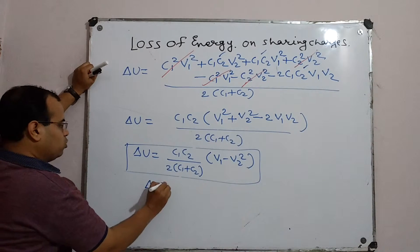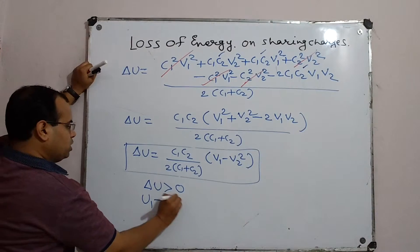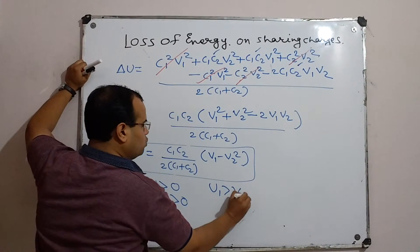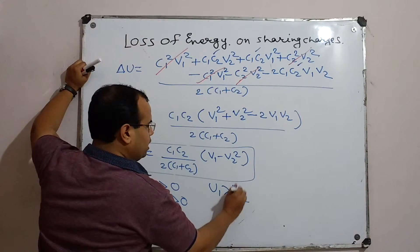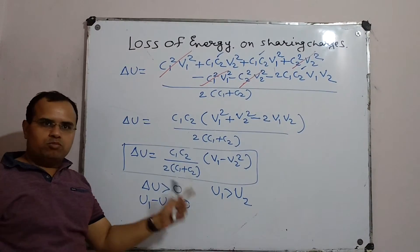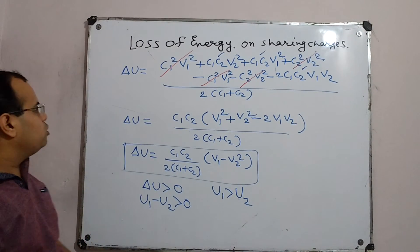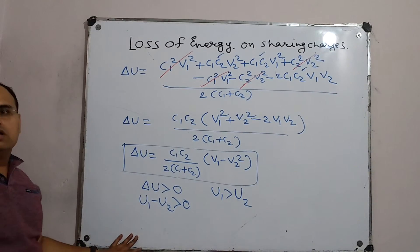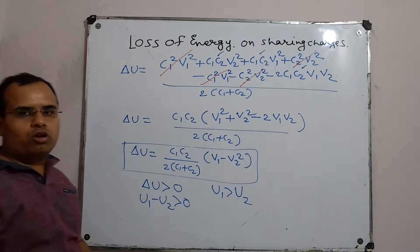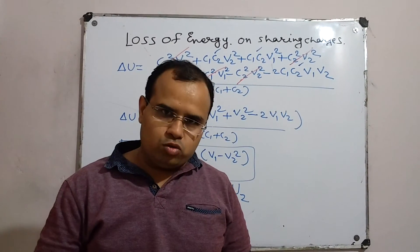You can see that this particular term del u is greater than 0. It means u1 minus u2 is greater than 0, and it means u1 is greater than u2. The initial energy possessed was more, and finally when they are connected the energy is less — so there is a loss of energy when the conductors are connected. This is the expression for loss of energy when the two conductors are connected. I hope it is clear to you. Thank you.